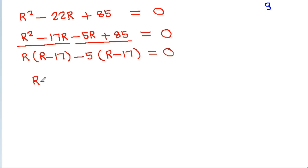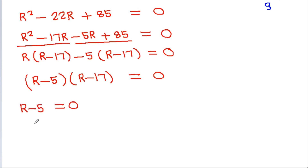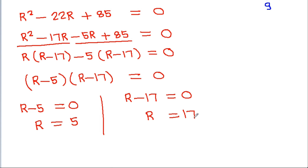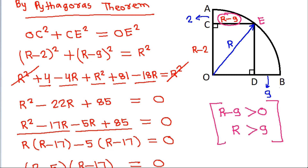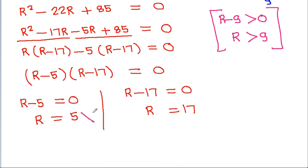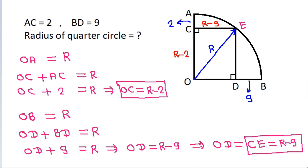This factors as (R minus 5)(R minus 17) equals 0, so either R equals 5 or R equals 17. However, since OD equals R minus 9 must be positive, R must be greater than 9. Therefore R cannot be 5, so R equals 17.